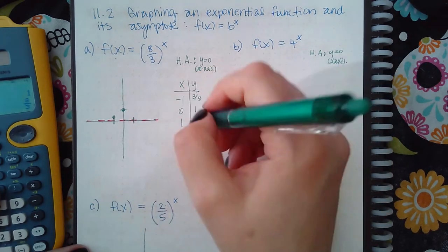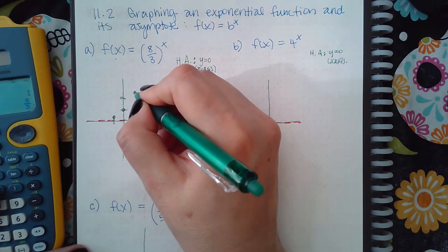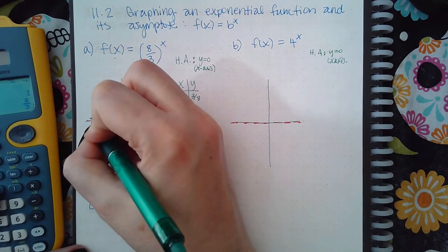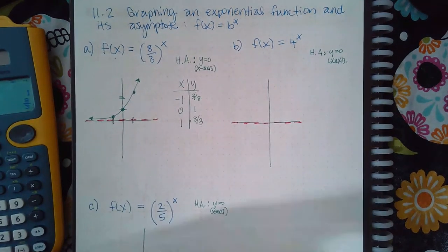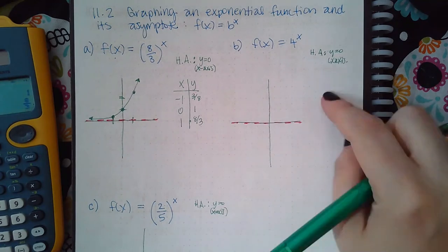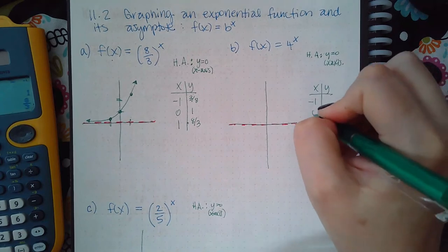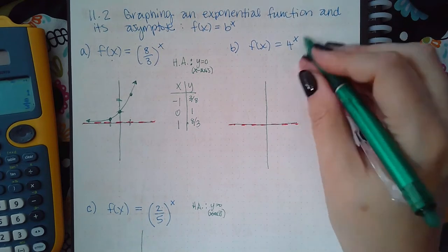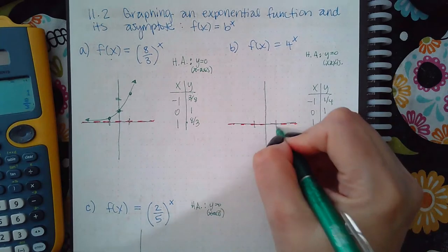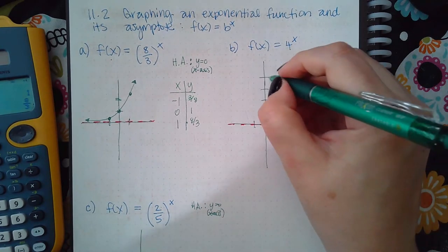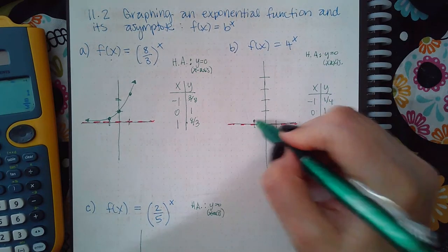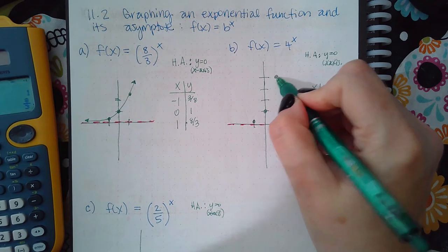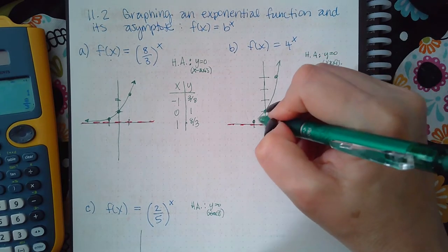Zero and one is here; negative one and three-eighths is a really low spot right there; and one and eight-thirds is actually more than two, so it's about up here. If you follow this curve, it looks like this, and since it can't cross the horizontal asymptote, it curves that way. Now for the second function, four to the negative one gives one-fourth, four to the zero gives one, four to the one gives four. Plotting those coordinates gives a curve going in this same direction.